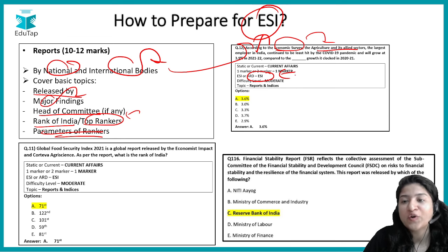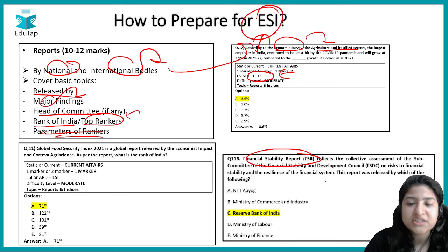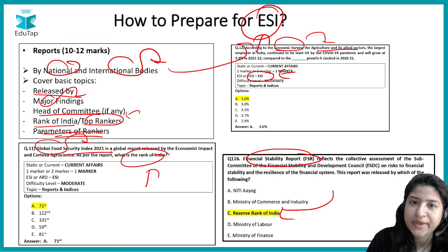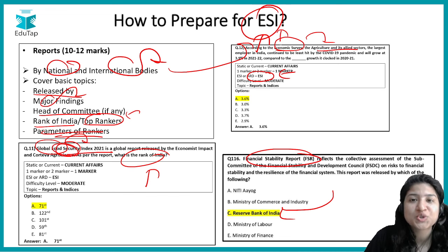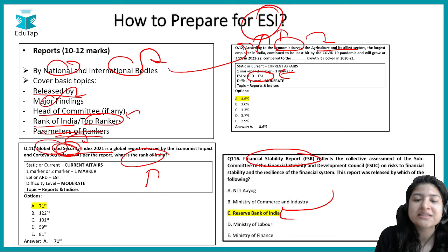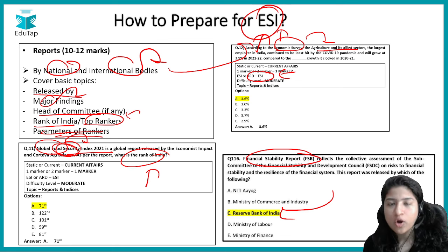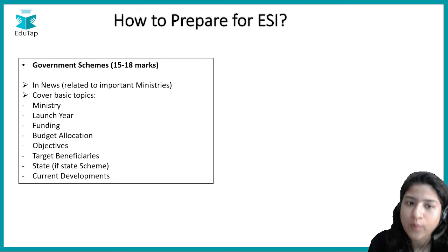You cannot afford to skip agriculture current affairs. For example, questions have asked which organization released the Financial Stability Report, and what India's ranking is in the Global Food Security Index. Providing food security to all citizens is a social issue, and since the Global Food Security Index was published by a relevant body, the question was asked — specifically, India's ranking. Knowing India's ranking and the top rankers is very important.